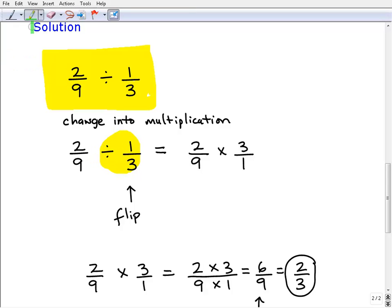To change this into a multiplication problem, we're going to go from division to multiplication. What we need to do is flip this fraction to the right. So here we have 1/3. If we flip it, or what we call finding the reciprocal, we have 3 over 1.